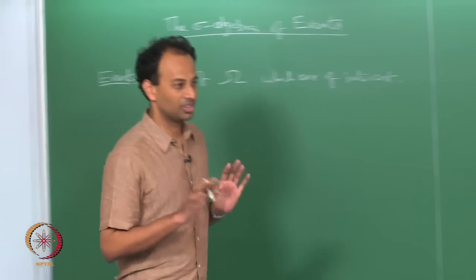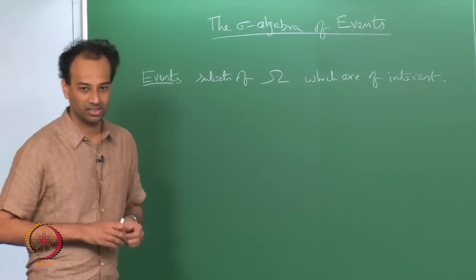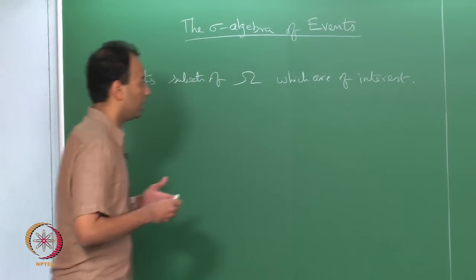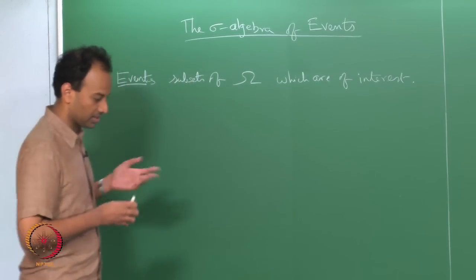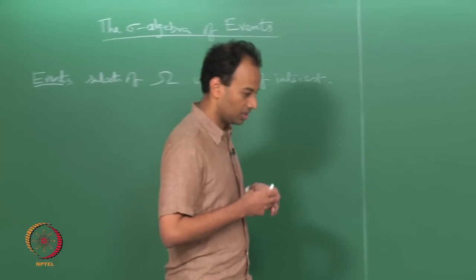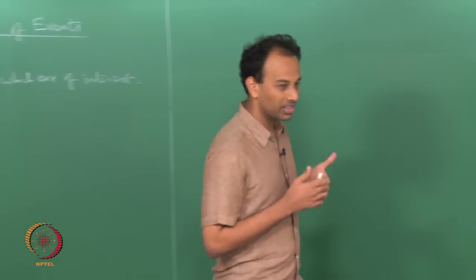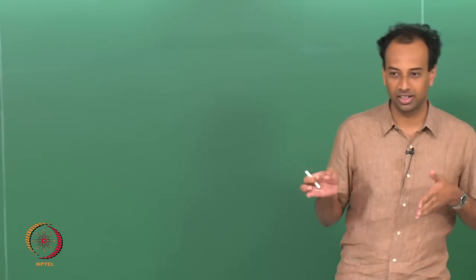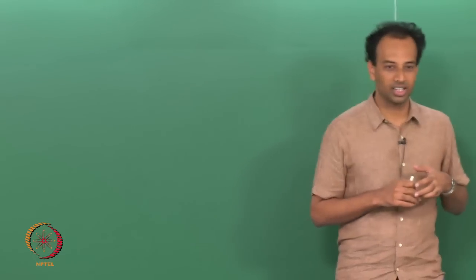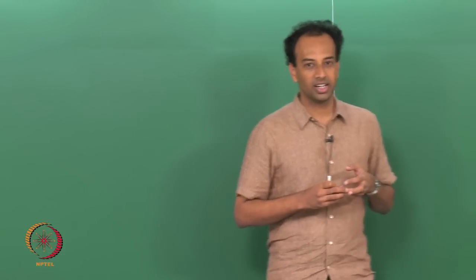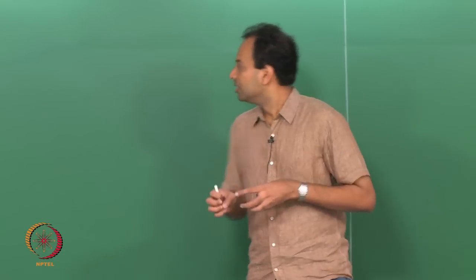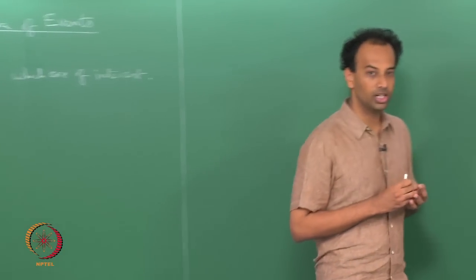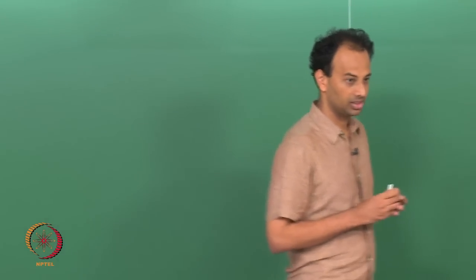This is not a point you may fully appreciate at this point, but we are building towards understanding it. One structure we imposed for events was that if A was an interesting event, A-complement should be interesting, and similarly if A and B are events they are interesting, then A union B should be interesting. This led to the structure called an algebra.